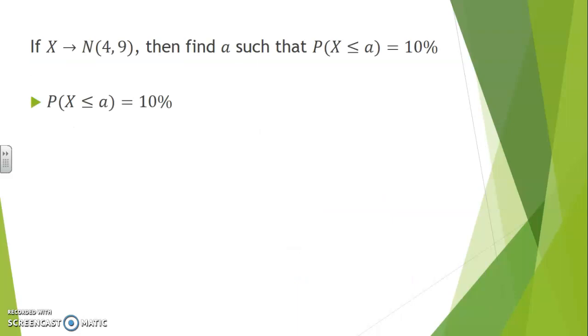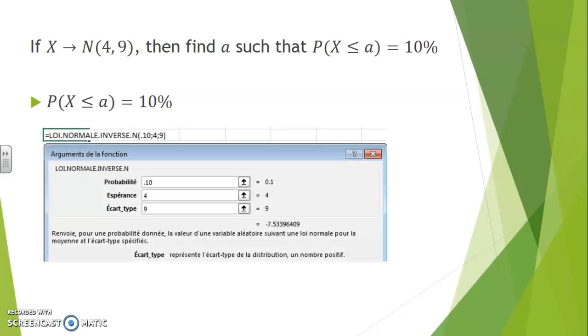In the reverse direction, suppose we are looking for a value of a, left of which 10% of the area is located. Because we are going in a reverse direction, an inverse function will be used in the Excel components. NORMDIST inverse is what we will be using.